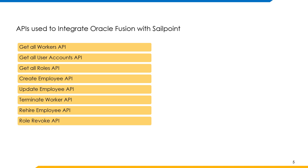The GetAllWorkers API fetches all the worker records as of a specific date. Worker types include Employee, ContingentWorker, and PendingWorker. By default, the current date is retained.